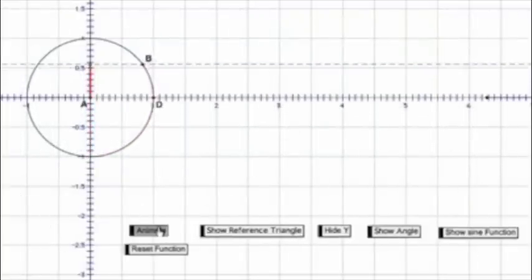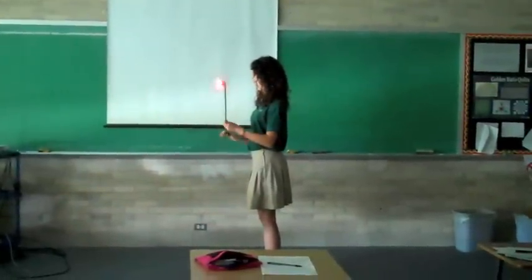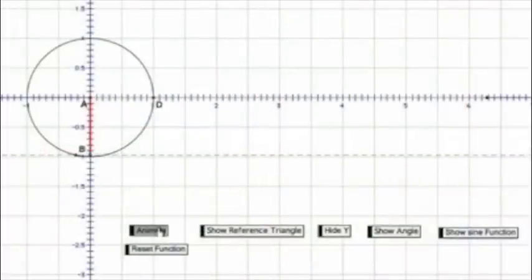We can also isolate the red line, or the y value of the reference triangle, as point B moves across the circle. The red line has a distinct correlation with the red flashing light displayed by Jasmine. The two are both vertically going up and down.